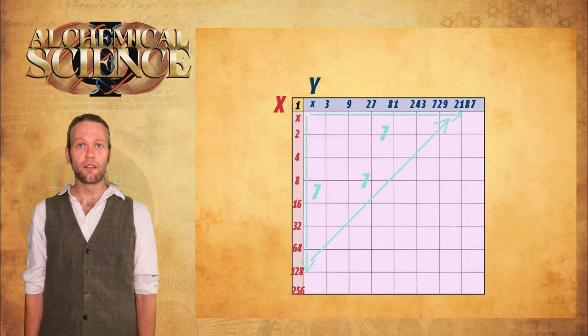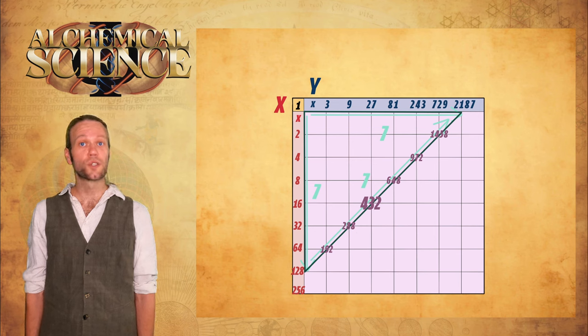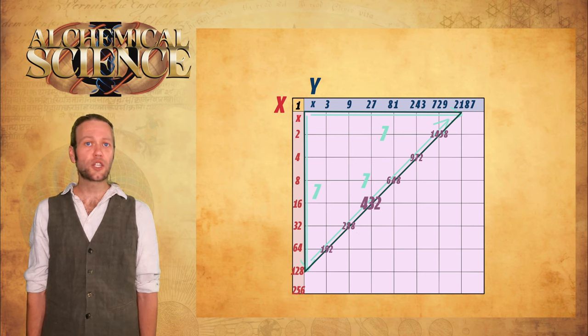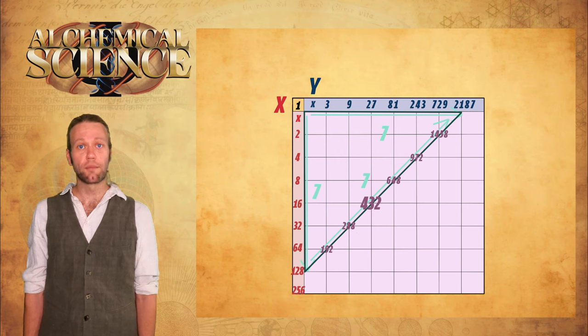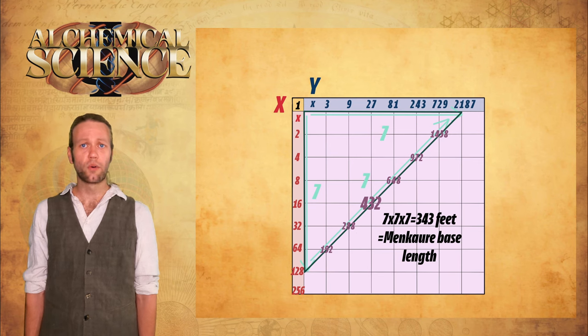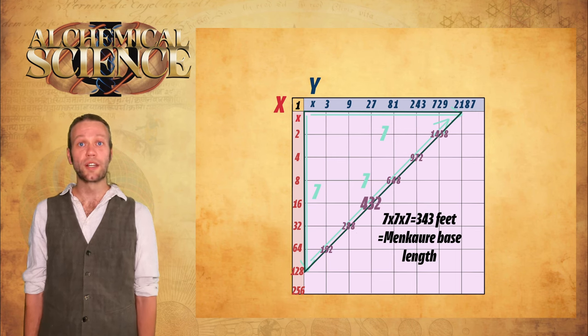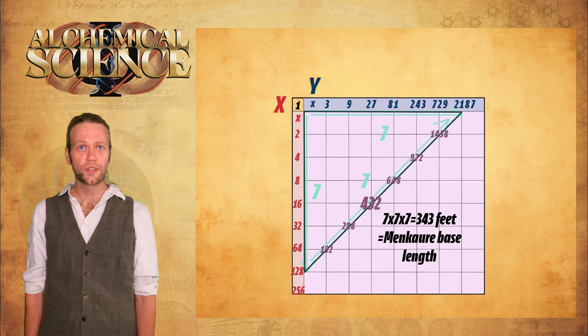If we draw in a 45 degree angle line between these two points, it will cross through eight number coordinates, which also creates seven intervals on the diagonal. Each interval here musically represents a perfect fifth between the frequencies of the note, as we mentioned previously. If we take seven by seven by seven, equaling 343, we can already ascertain the base length of 343 feet of the Pyramid Menkaure, the smallest of the three pyramids.